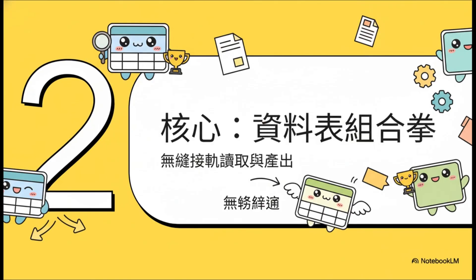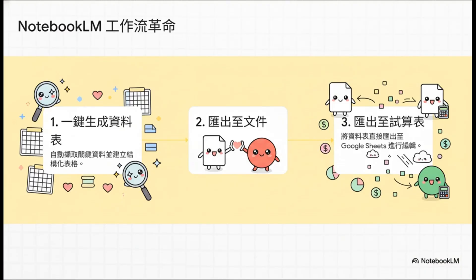就是要无缝地衔接「读取资料」跟「产出成果」中间那道鸿沟。这套流程主要有三个部分：第一，在Studio Panel里面新增了全新的资料表功能，可以让你一键抓取关键资料，自动生成表格；第二，可以很轻松地把笔记或学习指南汇出到Google Docs；第三，当内容里有表格时，可以直接汇出到Google Sheets，后续编辑、分享都超级方便。